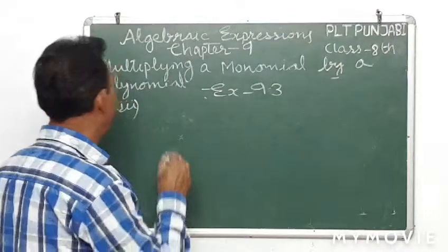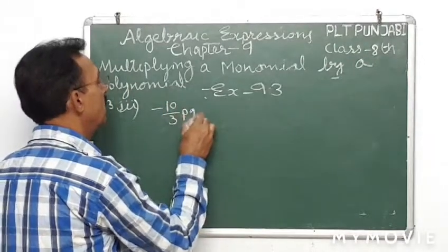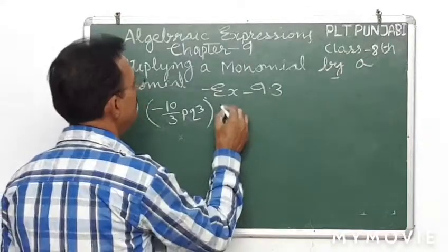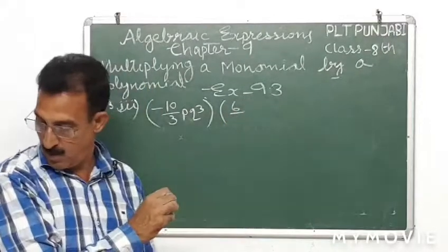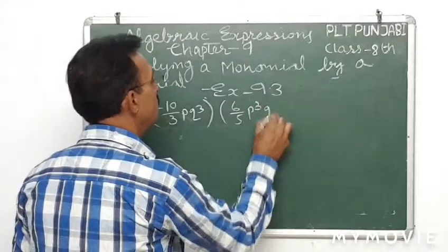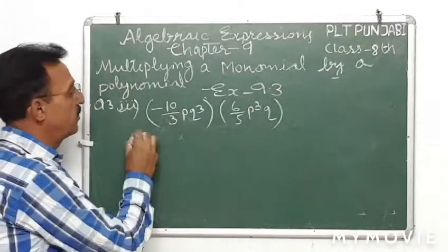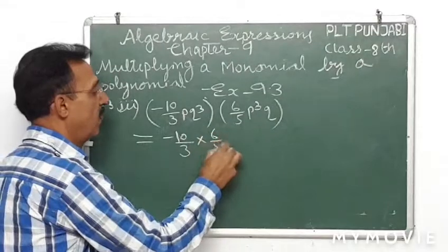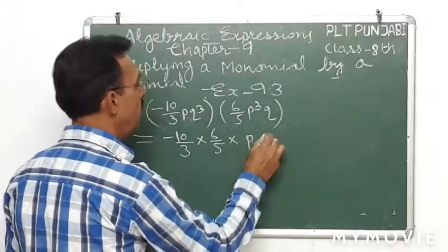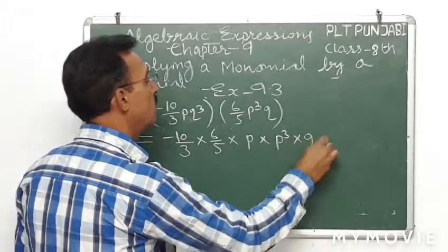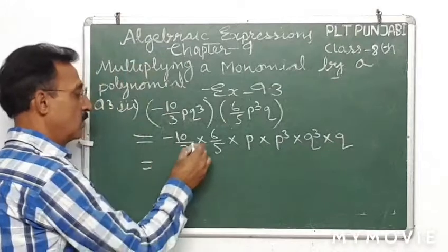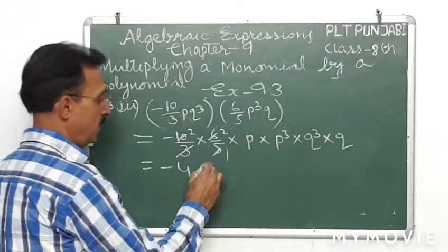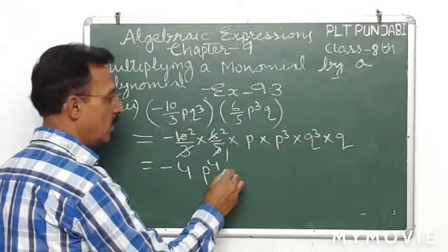Third part: minus ten over three PQ cubed. Multiplication with six over five PQ, PQ. We'll do multiplication of coefficients: minus ten over three into six over five into P into P raised to power 3 into Q raised to power 3 and Q. 3 into 6 is 18, divided by 5. 5 into 10 is 2. So minus 4P raised to power 1 plus 3 is 4, Q raised to power 4.